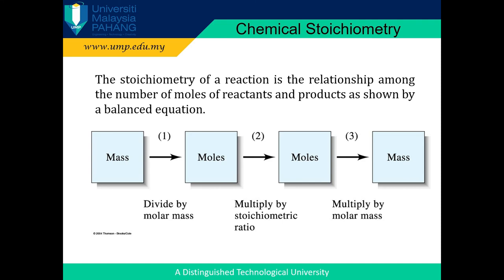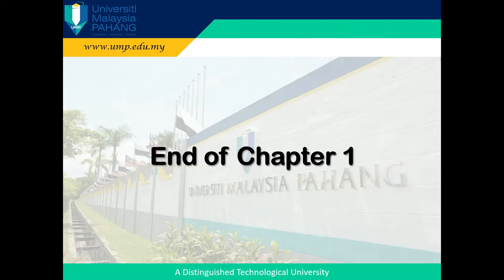The last topic in this chapter is chemical stoichiometry. The stoichiometry of a reaction is the relationship among the number of moles of reactants and products as shown by a balanced equation. To get moles from mass, divide the mass by the molar mass. To get moles from a given chemical equation, multiply by the stoichiometry ratio. To get mass from moles, multiply the moles by the molar mass. That covers all the topics in chapter one of the analytical chemistry course. Tutorials for each topic are given in other specific videos — go through all of them to deeply understand the material. See you in the next video for chapter two!